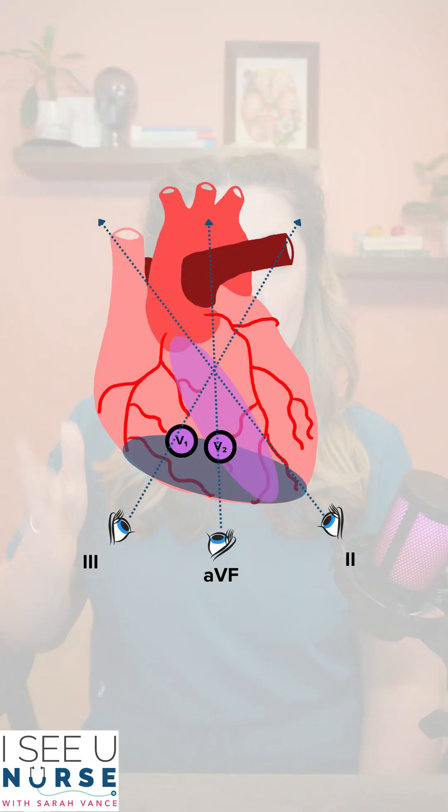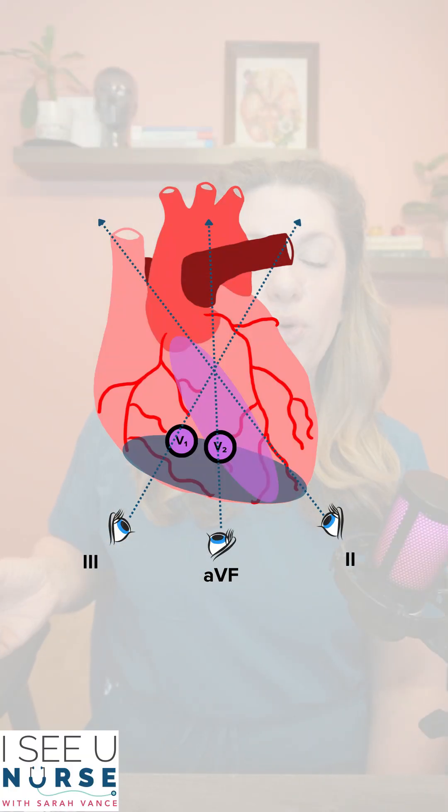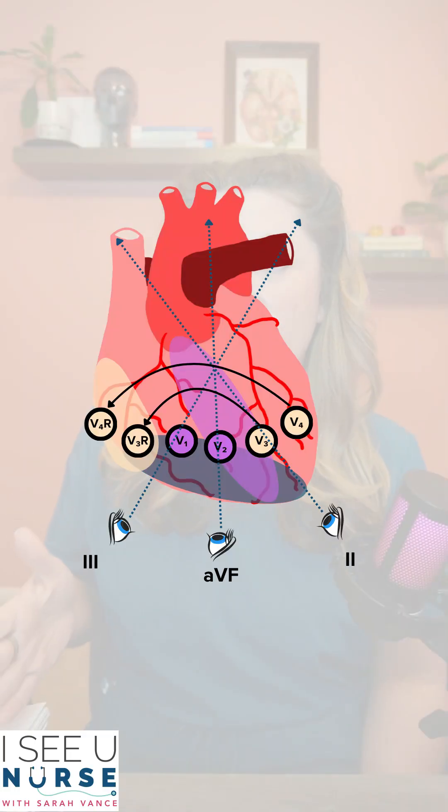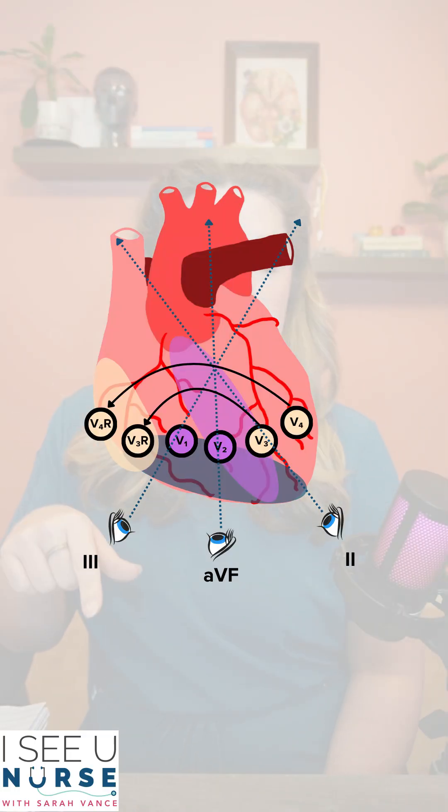As far as other ECG changes that may indicate RV involvement, you may see ST elevation in lead V1 in the standard precordial leads. V1 is really the only lead that truly looks at the right ventricle in the standard setup. But if you want to gain additional information, the gold standard would be to do a right-sided 12-lead ECG. If the patient has ST elevation on the right-sided ECG, lead V4R is pretty specific as well as sensitive to right ventricular involvement.